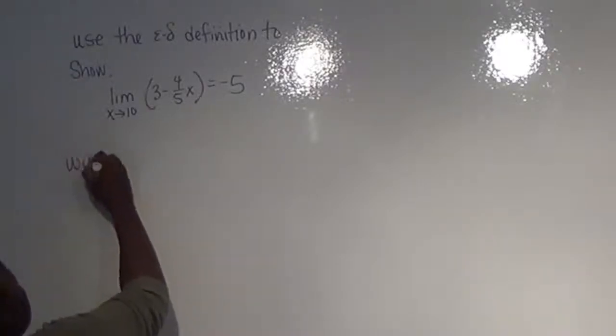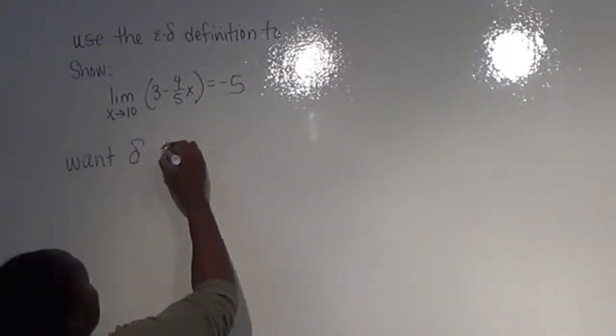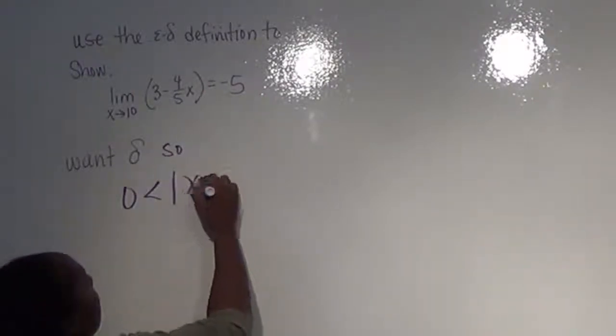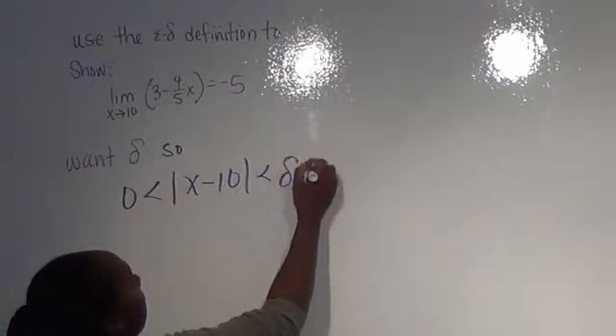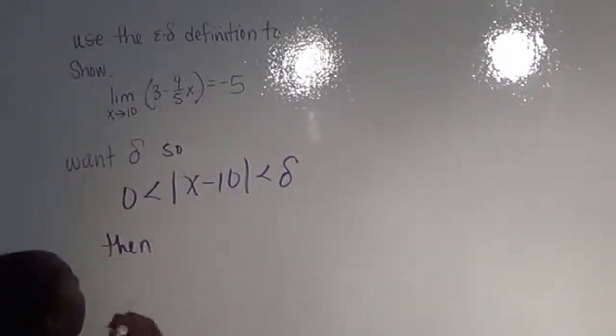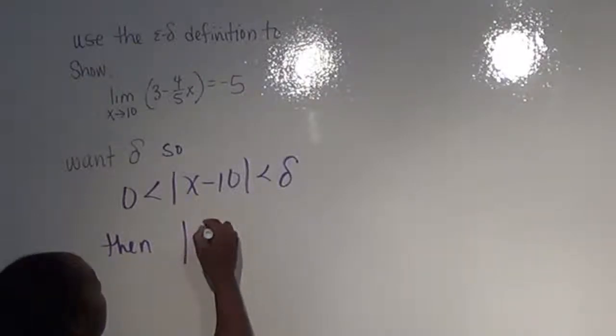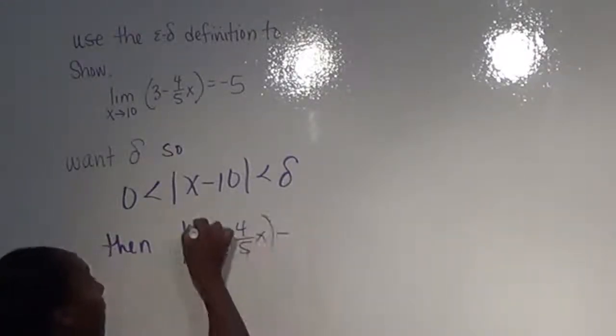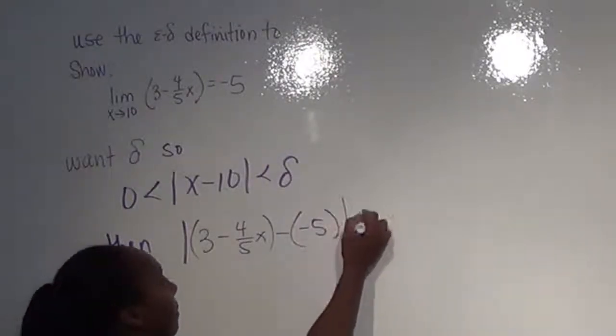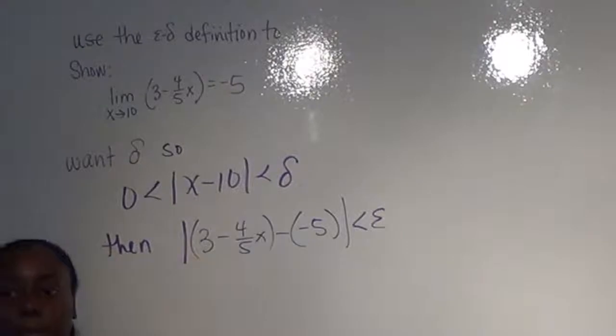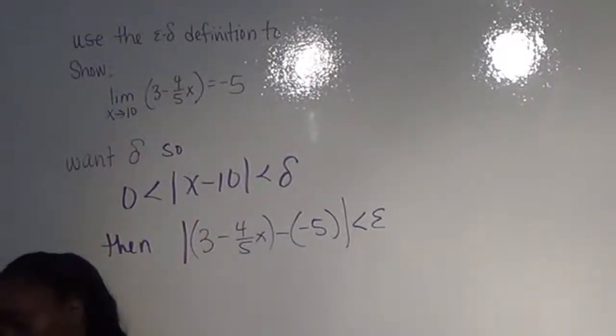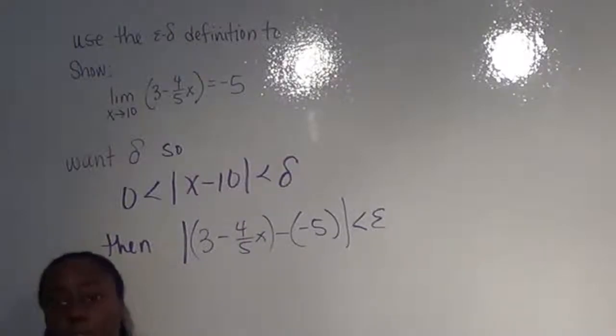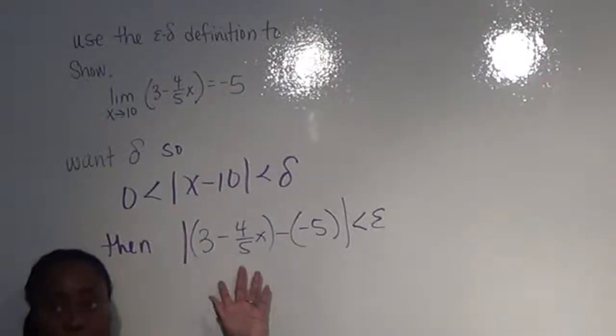In other words, we want delta, so 0 is less than or equal to |x - 10| is less than delta, which will then imply that the distance between the function value and the limit is less than epsilon. That's what we want to show. So to do this, we need to figure out what delta should be in terms of epsilon. Because if we can figure that out, then we should be able to simplify it down and show that this statement is true.